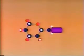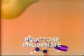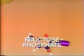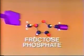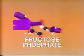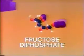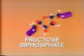In reaction two, the committed glucose phosphate encounters an enzyme and is reshaped to fructose phosphate. In reaction three, fructose phosphate reacts with a molecule of ATP, producing fructose diphosphate.